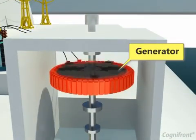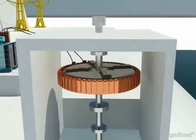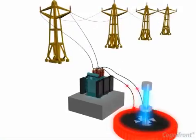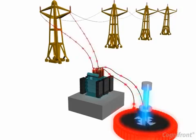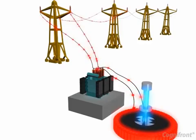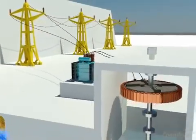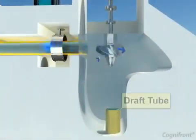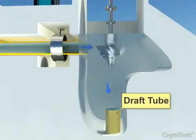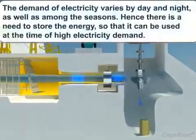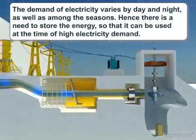The shaft from the turbine is connected to the generator, and therefore the generator produces electricity. The voltage of this electricity is raised by using a transformer and is transferred by the distribution lines. After running the turbine, the water is passed to the downstream water level by a draft tube.